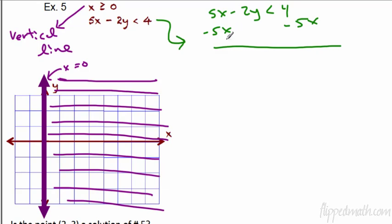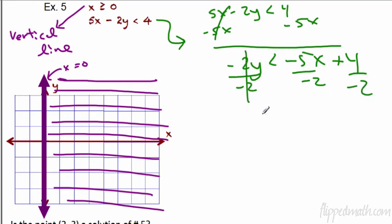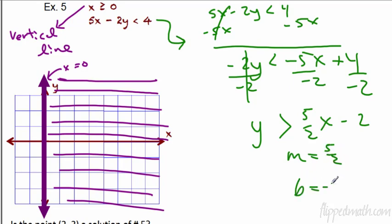For the green equation: subtracting 5x from each side, we get negative 2y is less than negative 5x plus 4. Now we divide by negative 2 — and when you divide an inequality by a negative, you switch the direction. So we get y is greater than five-halves x minus 2. Slope equals 5 over 2, y-intercept is negative 2. Starting at negative 2, go up 5, to the right 2. Make it a dotted line since it's not equal to. Greater than means we shade on top of this line.